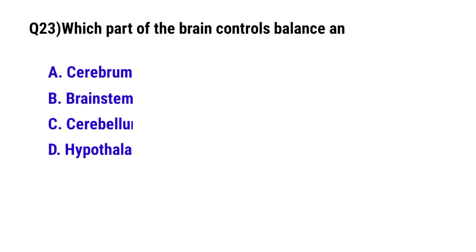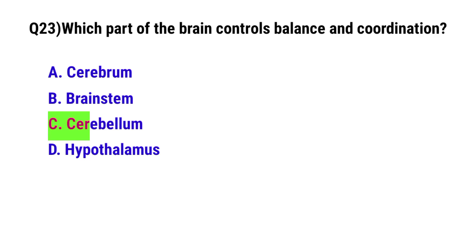Question number 23: Which part of the brain controls balance and coordination? The correct option is C: Cerebellum.